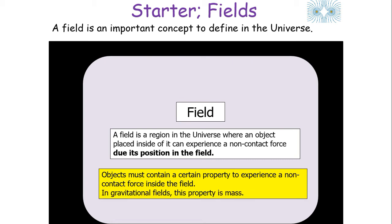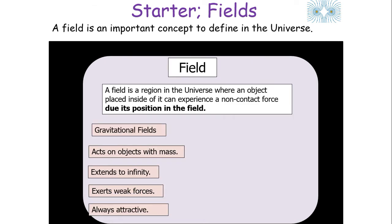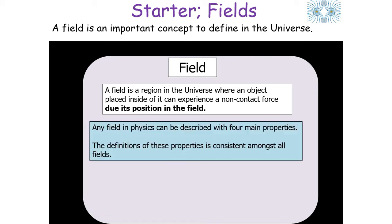In gravitational fields, this property is mass, but in electrical fields, this property is charge. Gravitational fields act on objects with mass, they extend out to infinity, they exert weak forces, and they're always attractive.